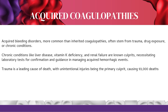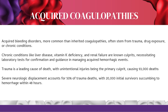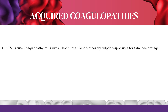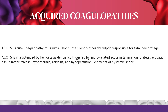Trauma is a leading cause of death, with unintentional injuries causing 93,000 deaths annually in the United States. Severe neurologic displacement accounts for 50% of trauma deaths, with 20,000 initial survivors succumbing to hemorrhage within 48 hours. ACOTS — acute coagulopathy of trauma shock — is the silent but deadly culprit responsible for fatal hemorrhage, characterized by hemostasis deficiency triggered by injury-related acute inflammation, platelet activation, tissue factor release, hypothermia, acidosis, and hypoperfusion.